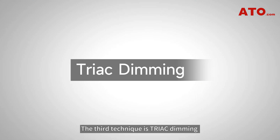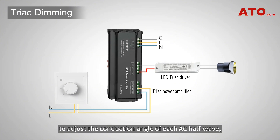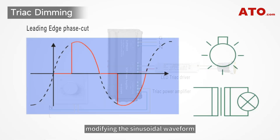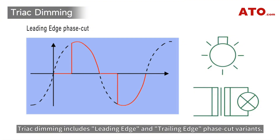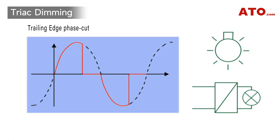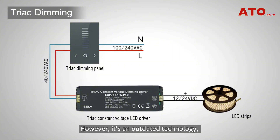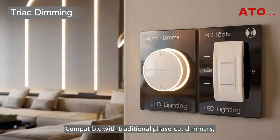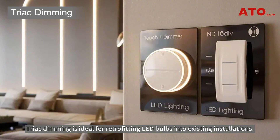The third technique is TRIAC dimming, which utilizes thyristor components to adjust the conduction angle of each AC half-wave, modifying the sinusoidal waveform to regulate effective current value for the dimming purpose. TRIAC dimming includes leading-edge and trailing-edge phase-cut variants. It can provide stable performance and lower cost, featuring simple installation. However, it's an outdated technology, limited for basic brightness adjustment. Compatible with traditional phase-cut dimmers, TRIAC dimming is ideal for retrofitting LED bulbs into existing installations.